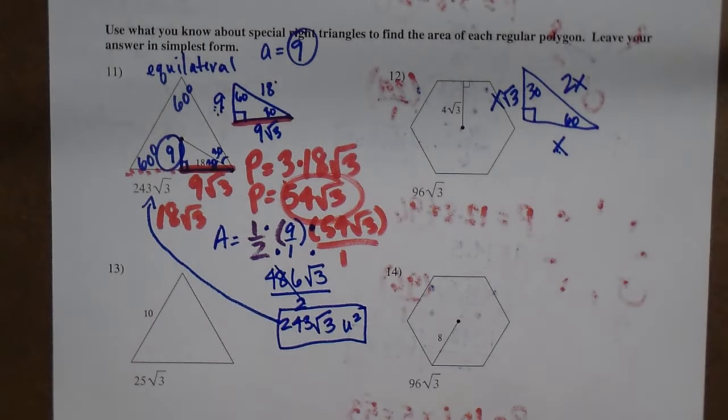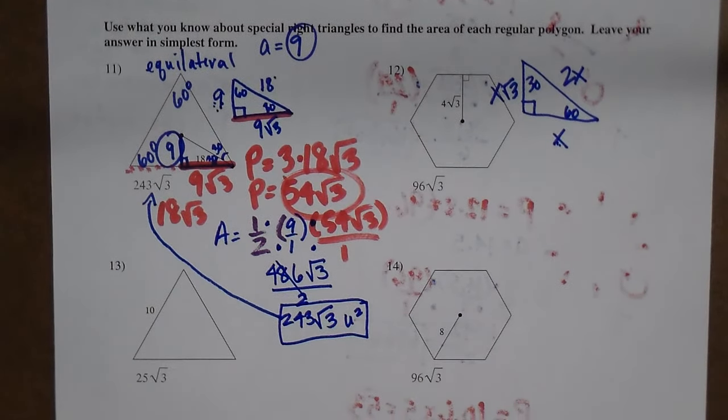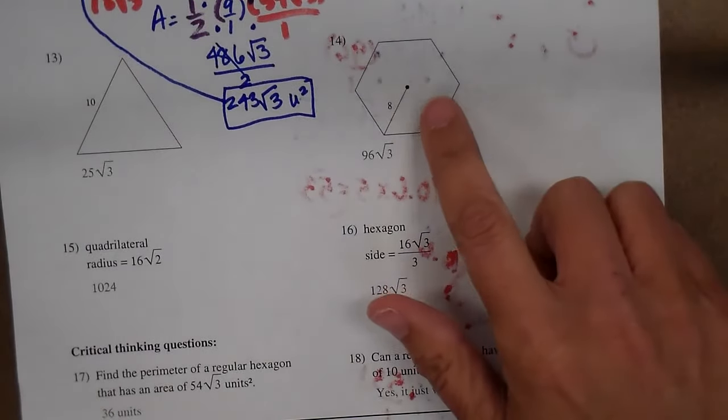That's a lot. It really is. But you have to apply 30, 60, 90s. Let's look at one more. Let's look at number 14.